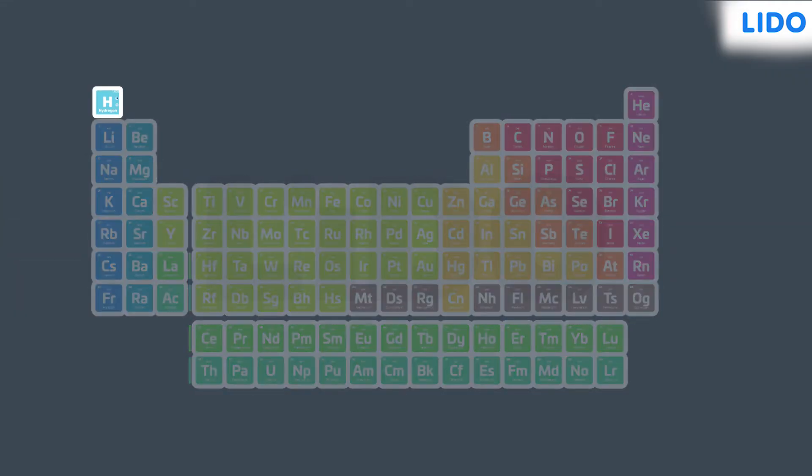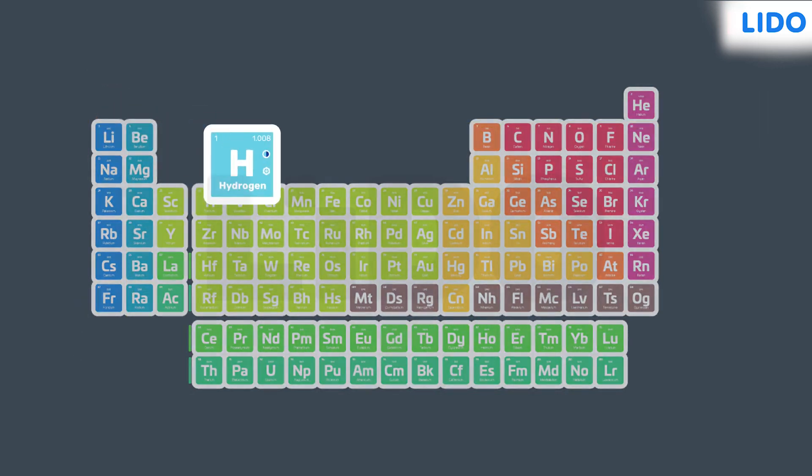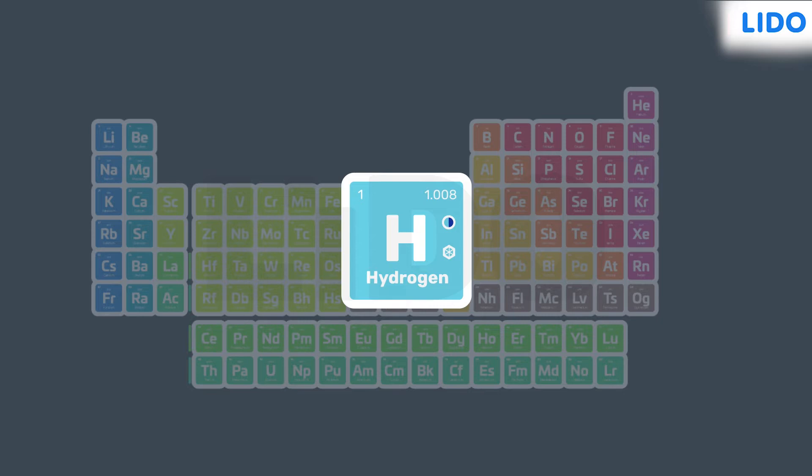Hydrogen is the very first element on the periodic table sitting in group 1 and period 1. Although its position is subject to a lot of debate because of its unique properties.